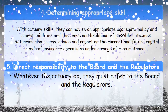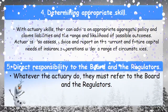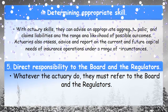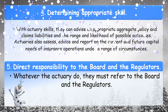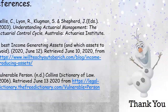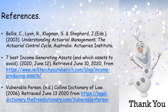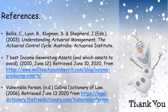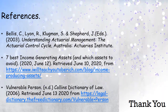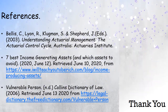Lastly, the fifth key area is that actuaries have direct responsibility to the board and the regulators. Whatever the actuary does, they must refer to the board and the regulators. If you are interested to know more about prudential supervision, you can refer to the provided links. That is all — I hope you understand well about prudential supervision now. Thank you.